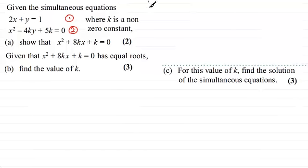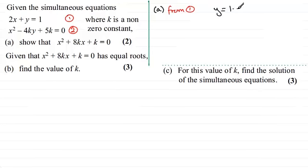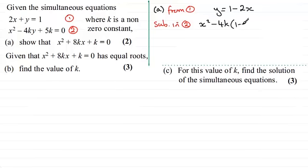So for part A, from equation 1, make y the subject. Subtracting 2x from both sides, we get y equals 1 minus 2x. Now I'll substitute this into equation 2. We're going to have x squared minus 4k multiplied by y, which is now 1 minus 2x, plus 5k, and that equals 0.